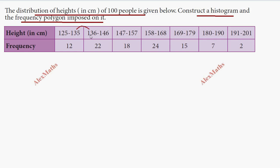There is a one-unit gap in the data, so the data is not continuous. To make the class intervals continuous, we subtract 0.5 from the first value and add 0.5 to the second value of each class interval. This gives us a continuous class interval for the histogram.